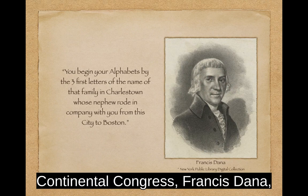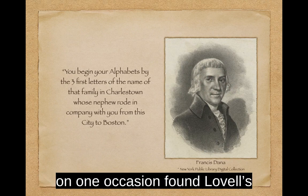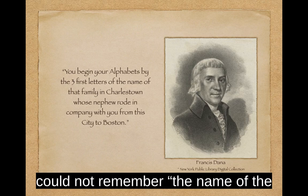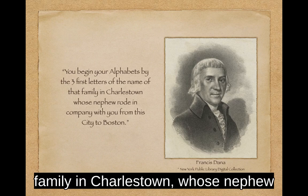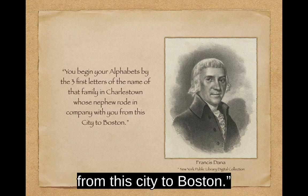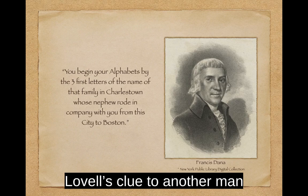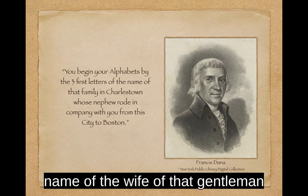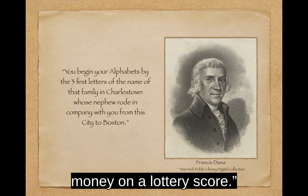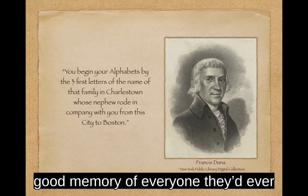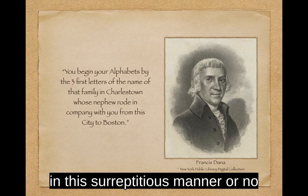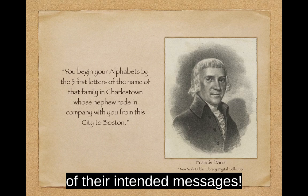Another diplomat and member of the Continental Congress, Francis Dana, on one occasion found Lovell's message unintelligible because he could not remember the name of the family in Charleston whose nephew rode in company with you from this city to Boston. Lovell's clue to another man instructed him to use the second and third letters of the maiden name of the wife of that gentleman from whom I sent you a little money on a lottery score. Apparently one needed to have a good memory of everyone they'd ever met — and it's a very good thing that keys are not sent today in this surreptitious manner, or no one would be reading any of their intended messages.